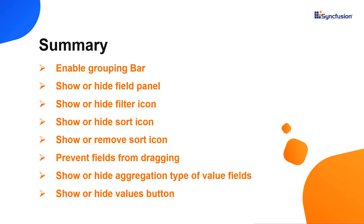In this video, you learned how to enable the grouping bar in a Syncfusion React pivot table. I showed you how to drag fields between different axes and how to show or hide the sort, filter and remove icons, value type drop down, and value buttons in the grouping bar. You can download a working example from the GitHub link in the description below. I've also included a link where you can check if you're eligible for our community license, which provides a free license key to use all our products. Thank you for watching — if you found it useful, give it a like and subscribe to our channel.